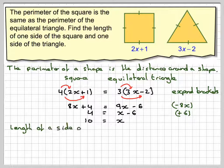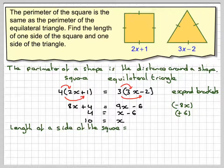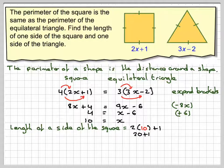So the length of the side of the square is going to be 2 times x. So 2 times 10 plus 1. 2 tens are 20 plus 1, which makes 21.